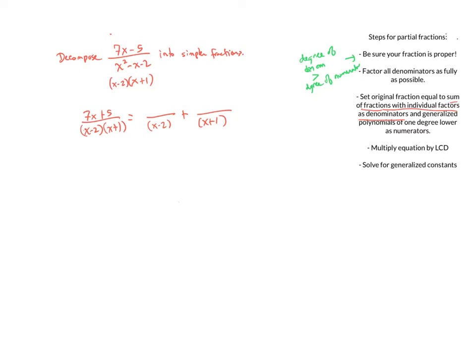On top of those fractions, we put generalized polynomials of one degree lower than what's in the denominator. Since the denominators are first-degree linear polynomials, the tops will be zero-degree — just constants. Generalizing means using a parameter instead of an actual number, so I'll use A on top of the first fraction and B on top of the second, since they could be different constants.